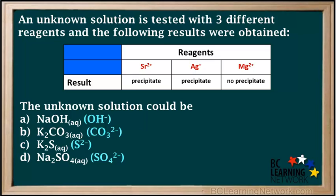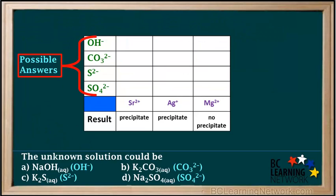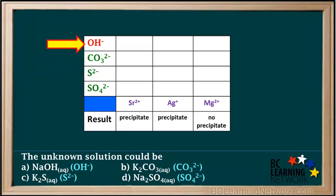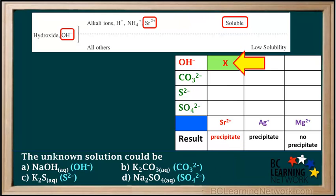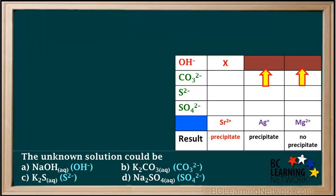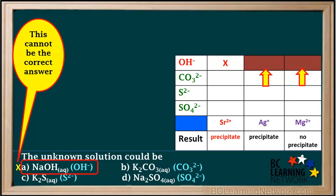We'll check each possible answer one at a time, starting with OH-. We check hydroxide and Sr2+ in the table — it says they form a soluble compound, so there should be no precipitate. But the actual result shows a precipitate. Since the reaction of hydroxide with strontium doesn't match the prediction, we put an X in this cell. Because the correct answer must match all predictions, OH- cannot be the correct answer, so we mark answer A with an X.